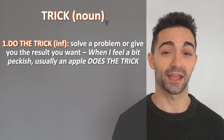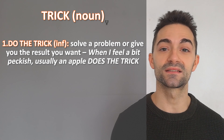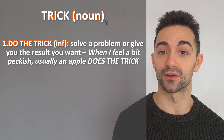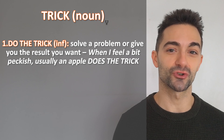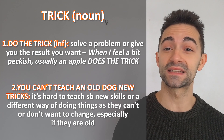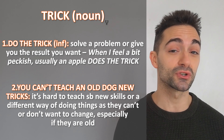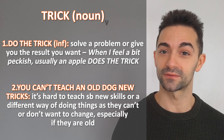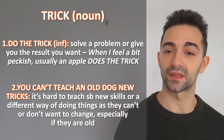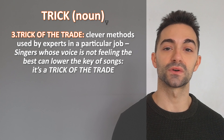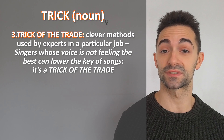The most common Halloween expression is trick or treat. Trick can be both a noun and a verb, and we'll be looking at a couple of expressions with it as a noun. To do the trick is an informal way to say to solve a problem or give the result that you want — so when I feel a little bit peckish, which means slightly hungry, an apple usually does the trick. You can't teach an old dog new tricks means it's hard to teach someone new skills because they can't or don't want to change. Singers whose voice is not feeling the best can lower the key of songs — it's a trick of the trade, referring to a clever method that experts in a specific job know.